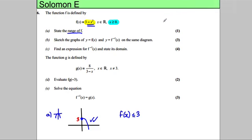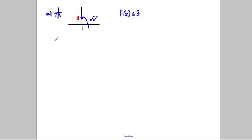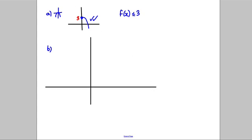Sketch the graphs of y = f(x) and the inverse function on the same diagram. I've already started, but let's make it bigger and neater. I'm going to draw big axes here. It's a quadratic that starts up at 3 and it's a negative quadratic, so it's going to go down something like that.